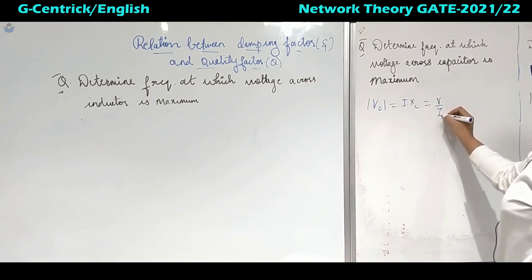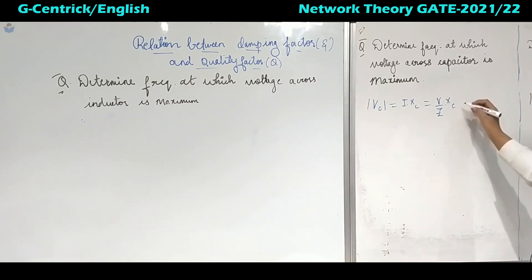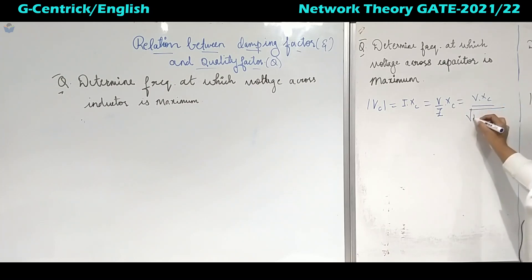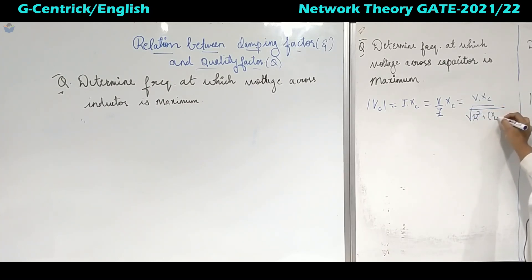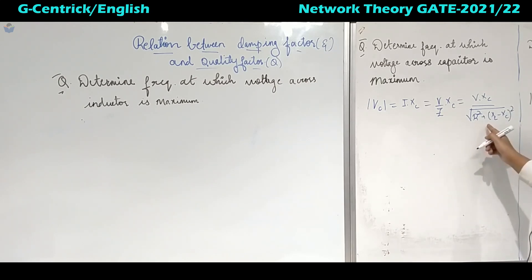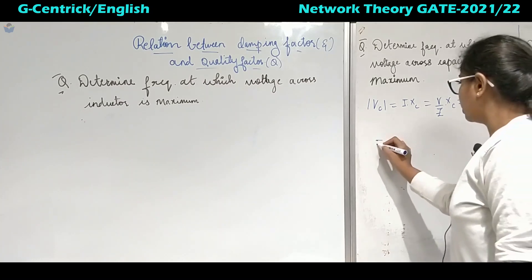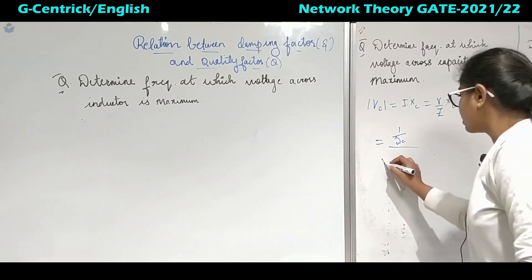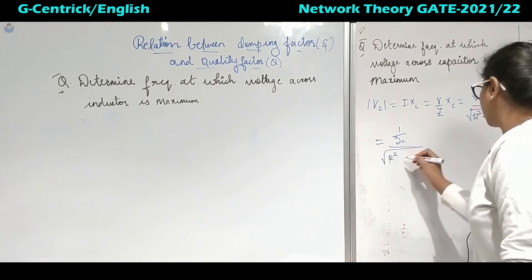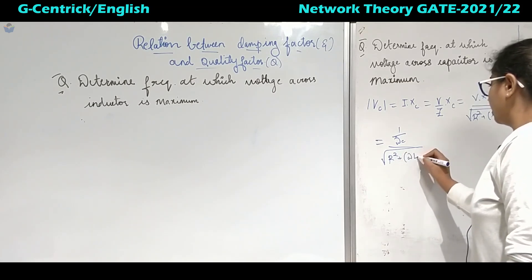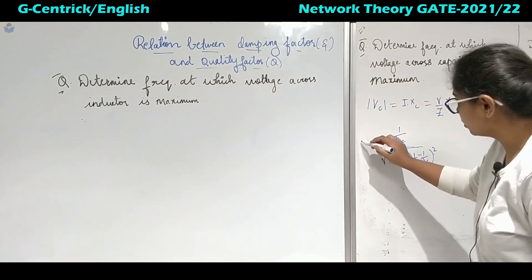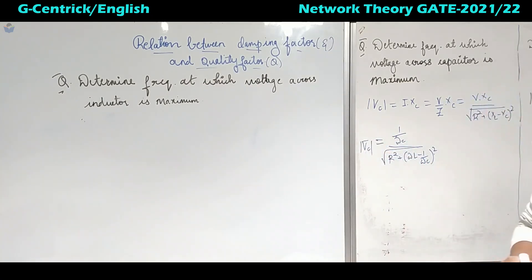We can write I as V by Z, into XC. So this Z can be written as under root of R squared plus (XL minus XC) whole squared. Now substituting XC equals 1 upon omega C, we keep R squared as it is. Then we have XL as omega L, and (omega L minus 1/omega C) whole squared. So this equation gives the magnitude of VC.